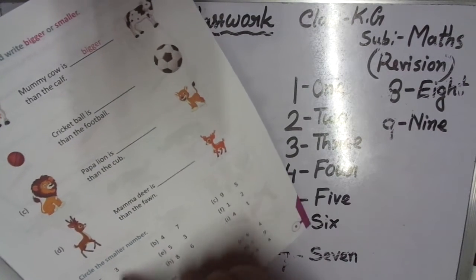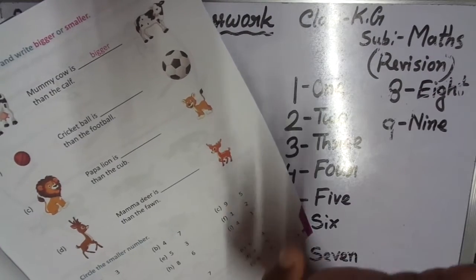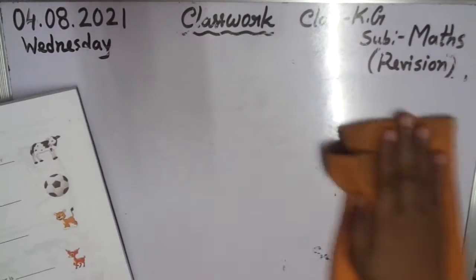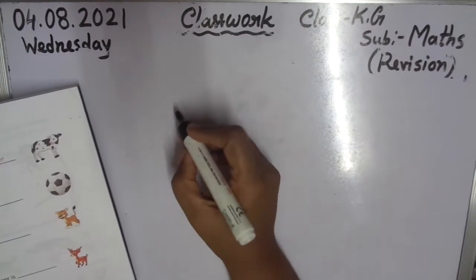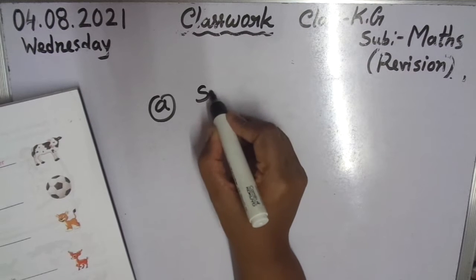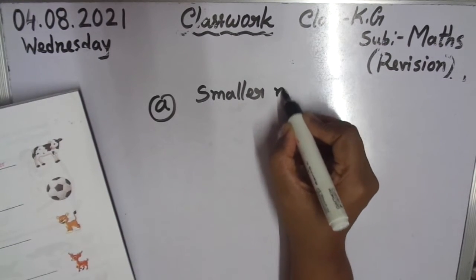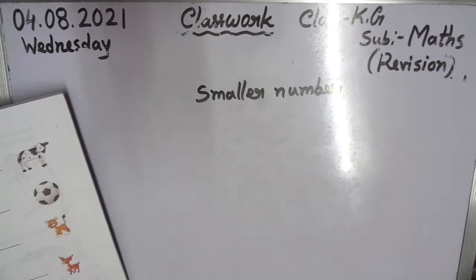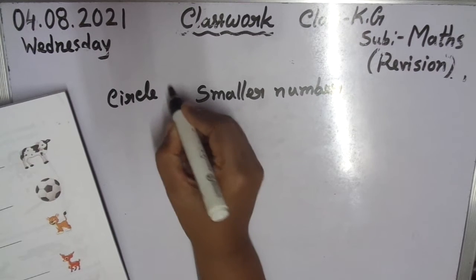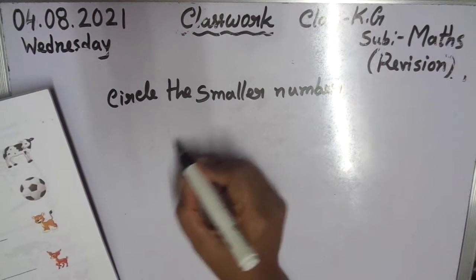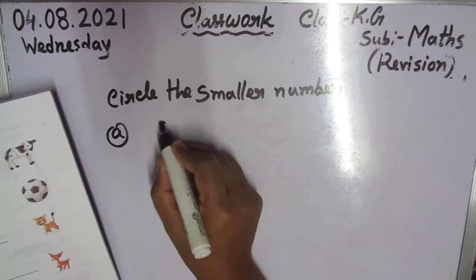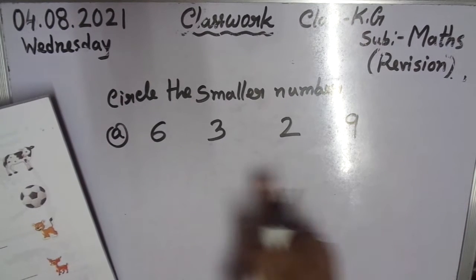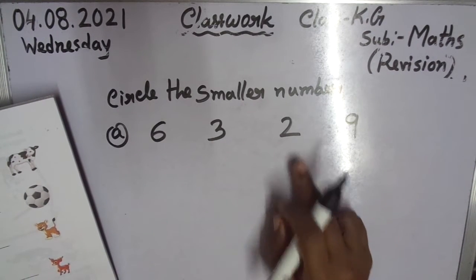5 — circle the smaller number. It's very important. 2 numbers are here, option 2. But 4 options is practice. Now follow me — smaller number, you practice A — smaller number. Circle, choose — smaller number. Circle the smaller number.